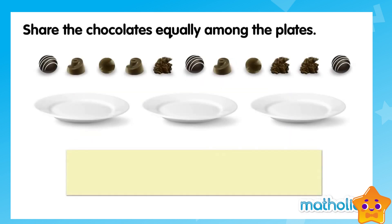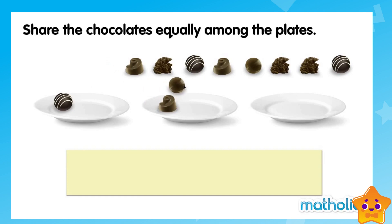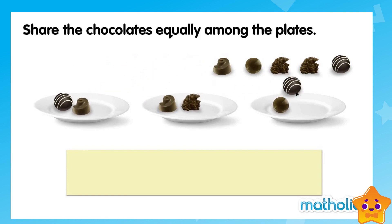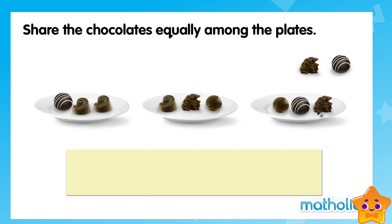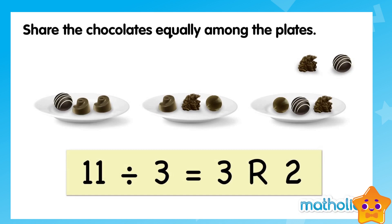Share the chocolates equally among the plates. There are 11 chocolates. Let's share them. There are three chocolates on each plate. There are two chocolates remaining. We can write this equation: 11 divided by three equals three, remainder two.